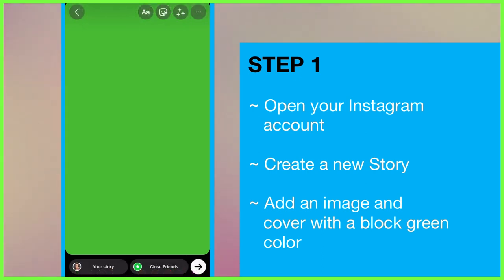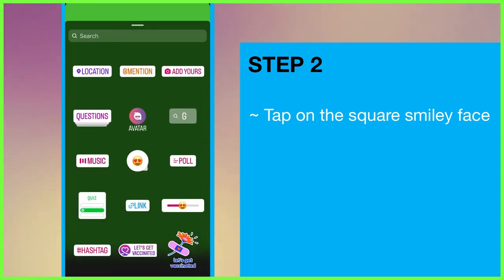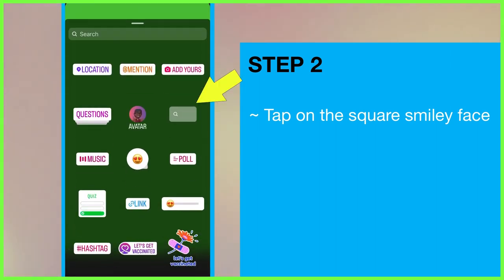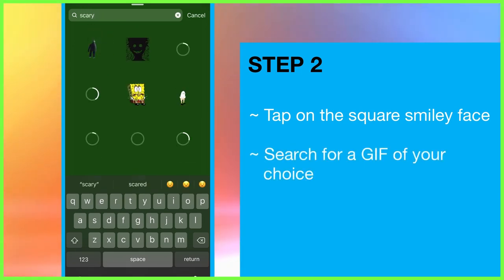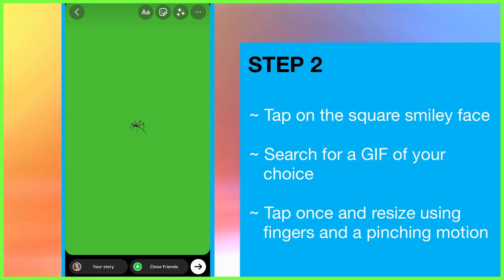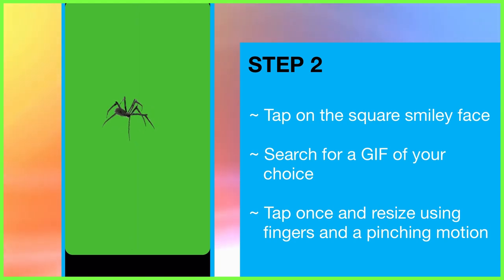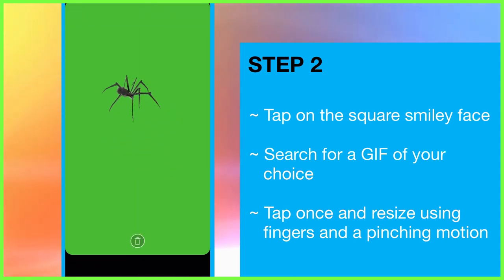The next stage is to find the GIF you want to add to your LumaFusion project. Tap on the square smiley face sticker icon at the top of the page and tap on the GIF icon. Search through the library of GIFs by typing in a keyword and choosing a GIF that you like. Tap once and it's been added to your story. Resize it by pinching outwards with two fingers, and move it around by dragging your finger across the screen. Now you have a GIF ready to add to LumaFusion.